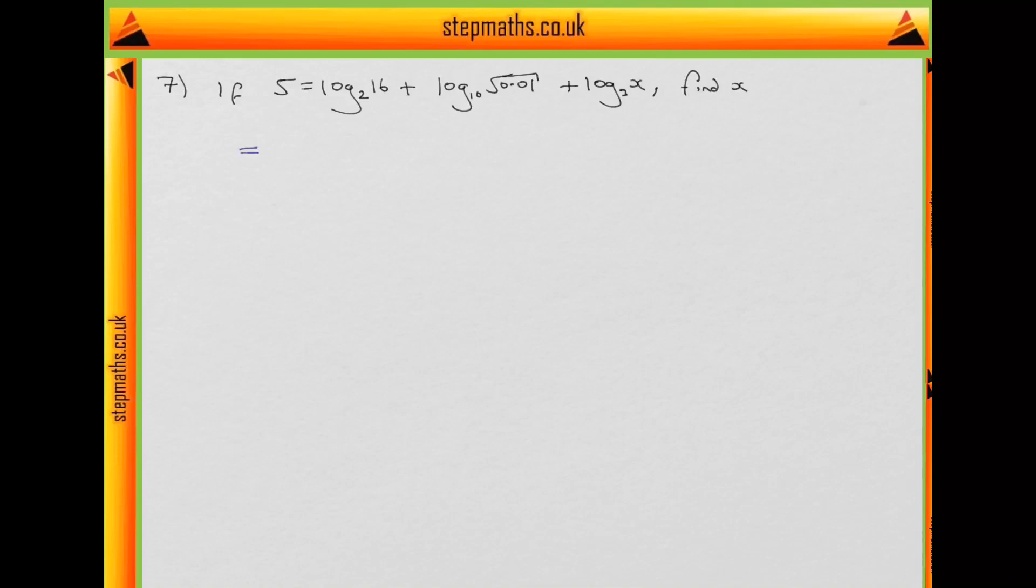Okay, so doing that, we think log base 2 of 16. So what does our log mean? We know that a log, log base a of b equals c, means that a to the power of c equals b. So we have to find a value of c, so 2 to the c equals 16. Well, we know 2 to the 4 is 16, so log base 2 of 16 is equal to 4.